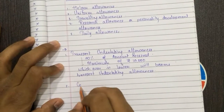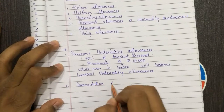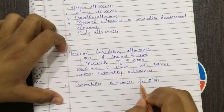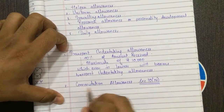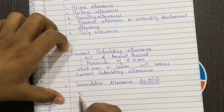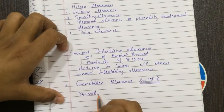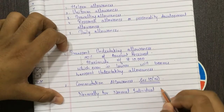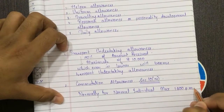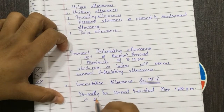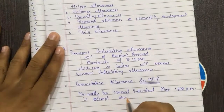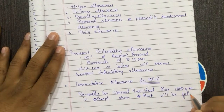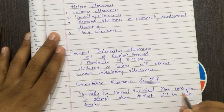Second is commutation allowances under Section 10(14). For a normal individual, a maximum of ₹1,600 per month is exempt. Above that, the entire amount will be fully taxable including the exemption amount.